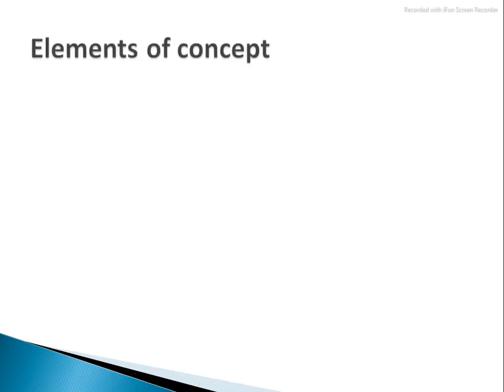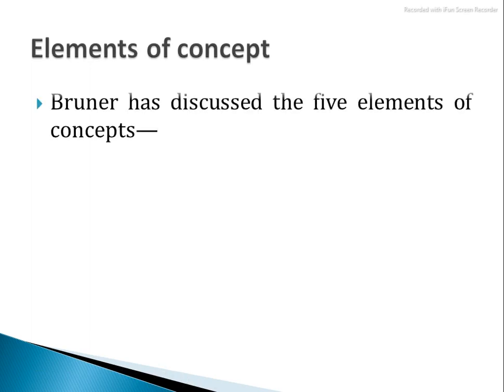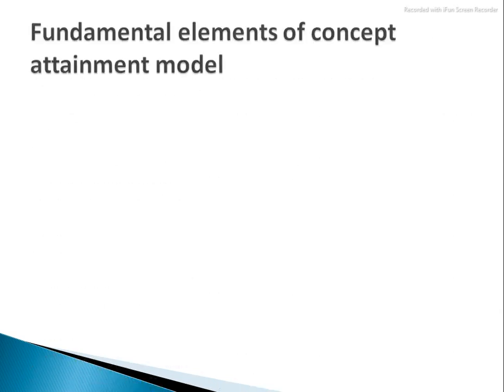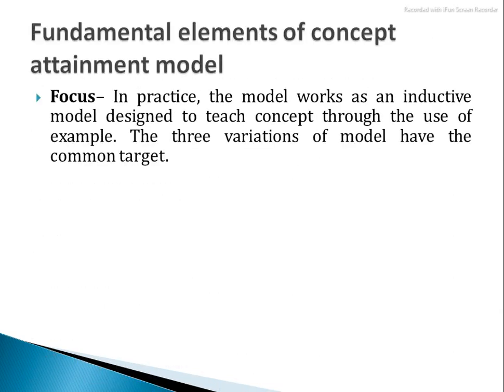Next are the elements of the concept. Brunner gave 5 elements: name, example, attributes, attribute values, and rule. These are the 5 elements of the concept. There are also some fundamental elements such as focus — focus is on inductive thought.